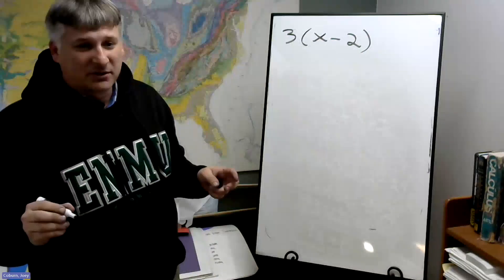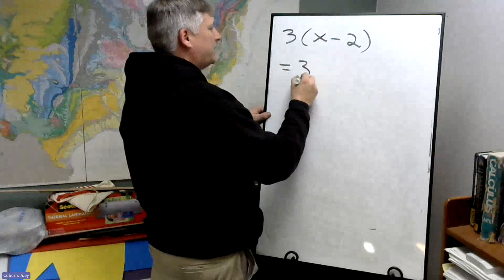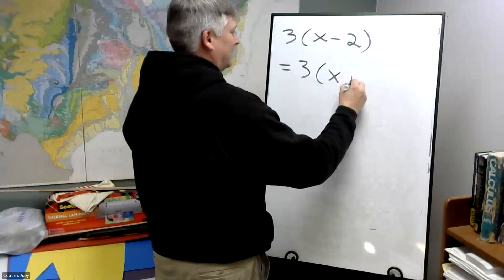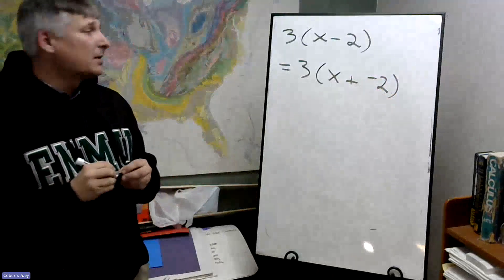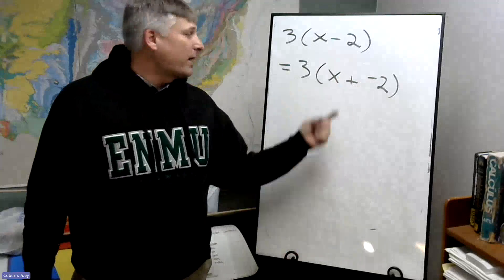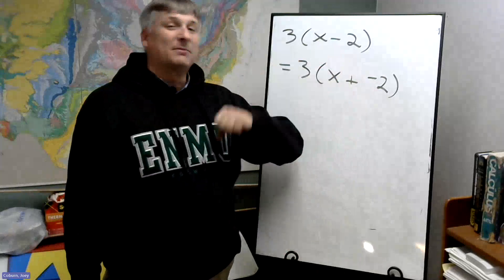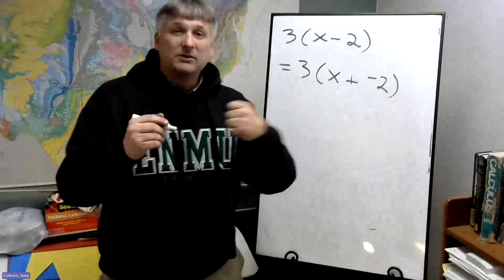If we have a subtraction, we can rewrite this as adding a negative. Recall from negative numbers that subtracting is the same as adding a negative, or adding a negative is the same as subtracting. And since now we're adding, we can distribute.